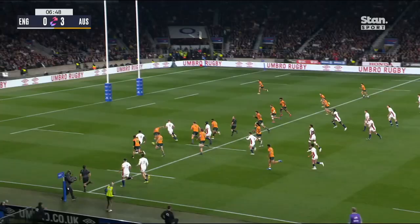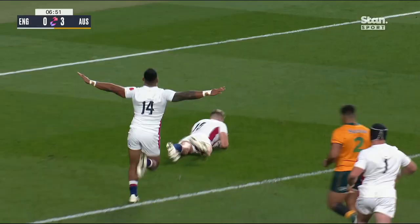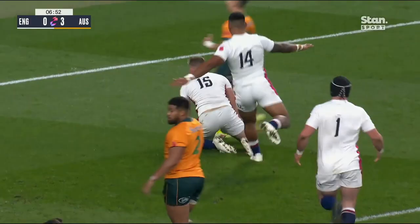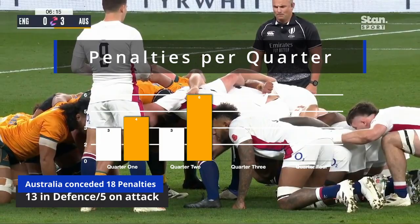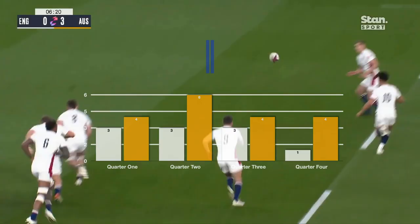Excellent interplay between England's forwards and backs set the young fullback on his way, and throughout the game Australia struggled with discipline, conceding 18 points from 18 penalties. Stewart's try came directly from this ill discipline when England are awarded a free kick after Australia are penalised for pre-engaging.